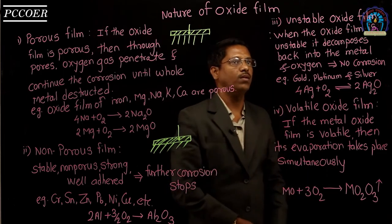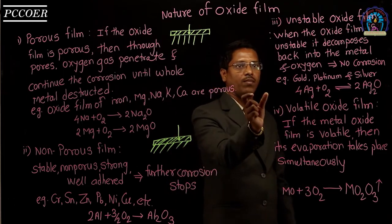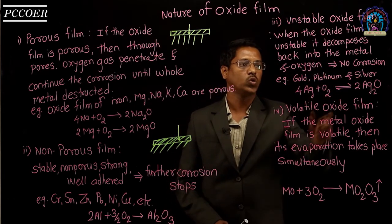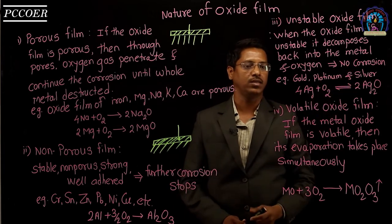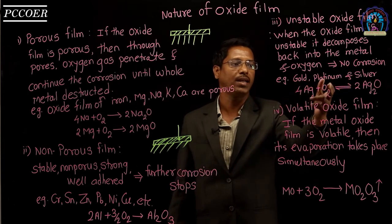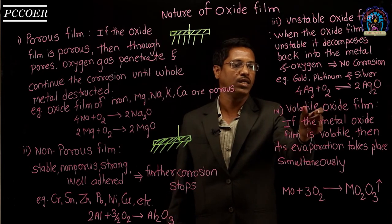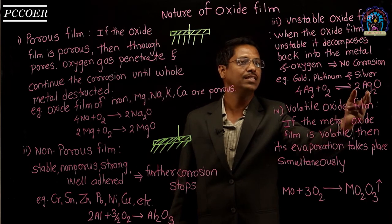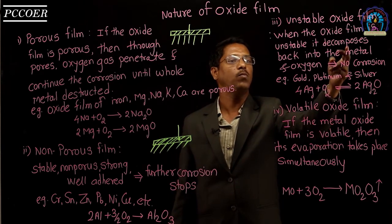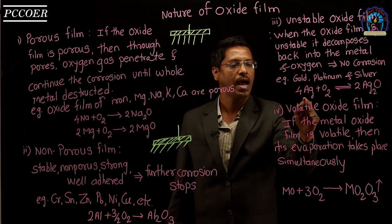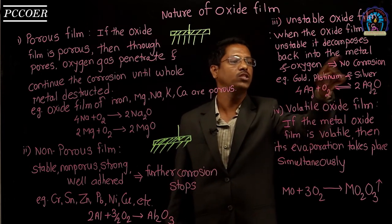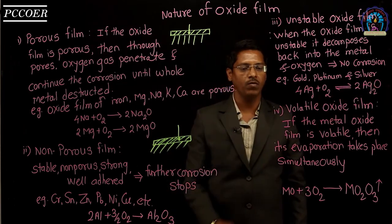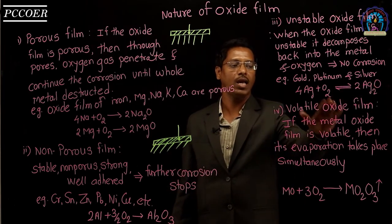The third type is the unstable oxide film. When an unstable oxide film forms, it decomposes back into the metal and oxygen, so no corrosion takes place. Examples include gold, platinum, and silver. When these metals combine with oxygen, the metal oxide formed decomposes back into the metal and oxygen, and therefore no corrosion occurs as no permanent oxide is formed.